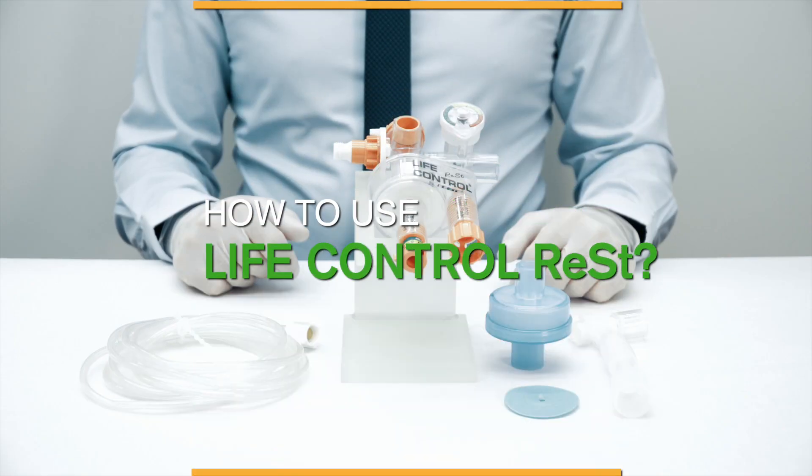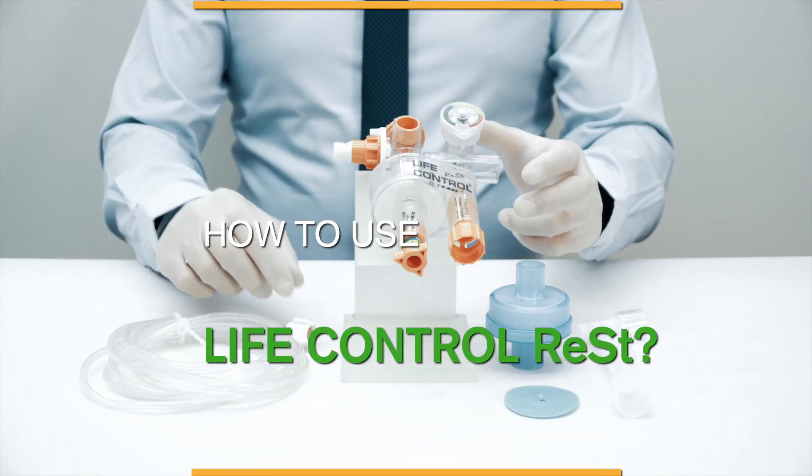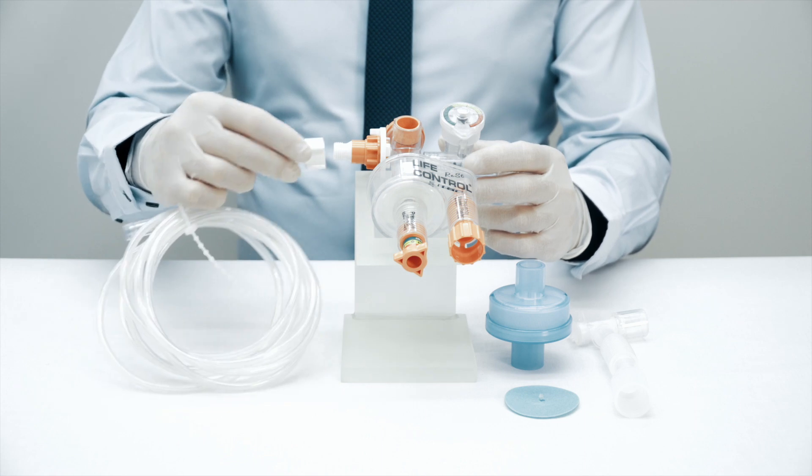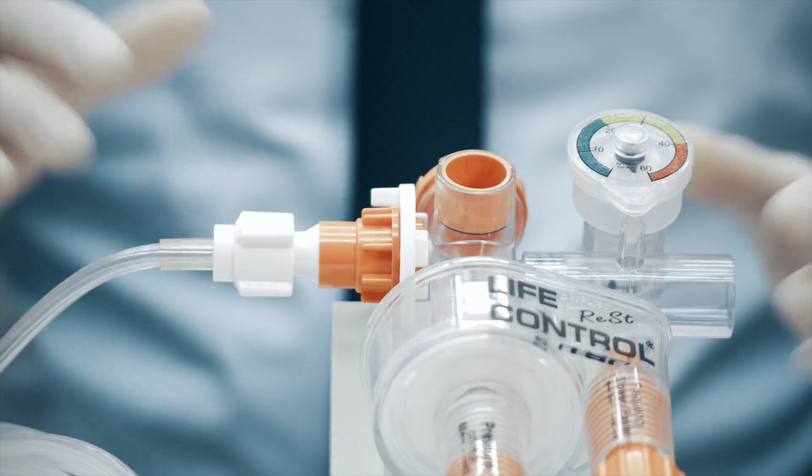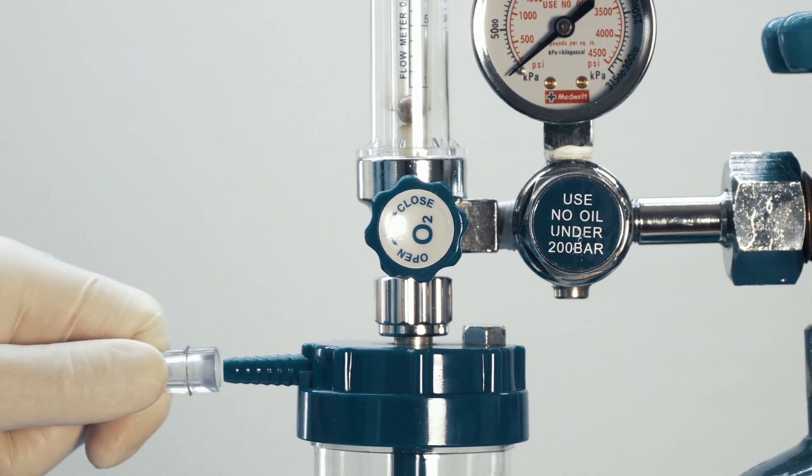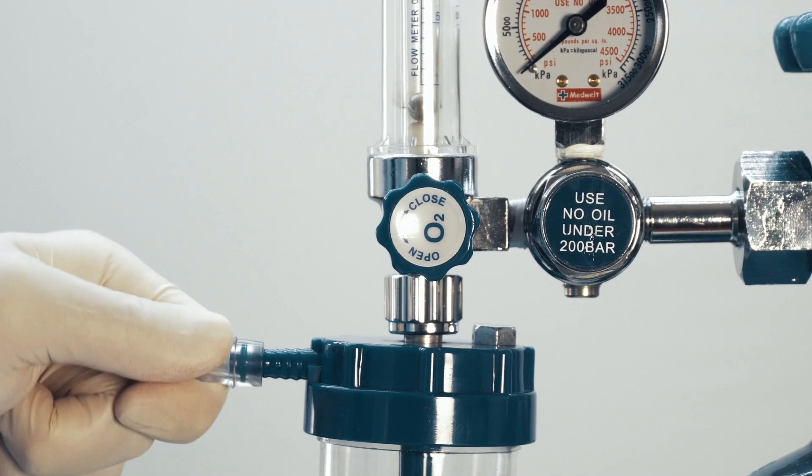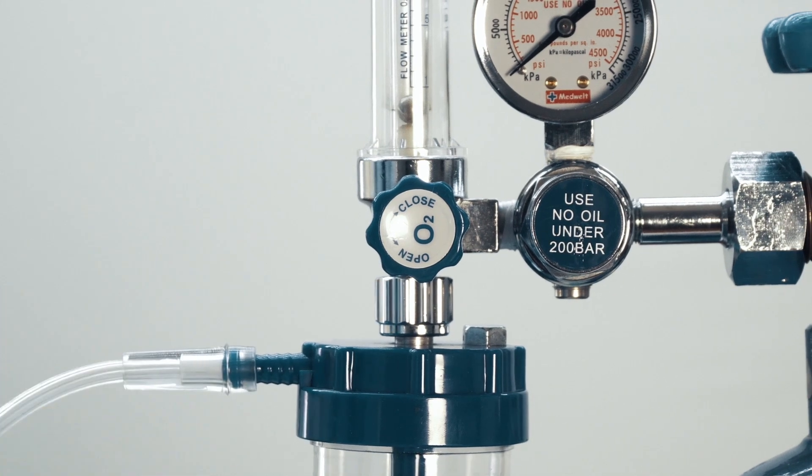How to use life control rest? Connect the oxygen connection hose to the air inlet. The connection hose comes assembled from its package. Connect the device to an oxygen cylinder or fixed oxygen system with the oxygen connection hose.